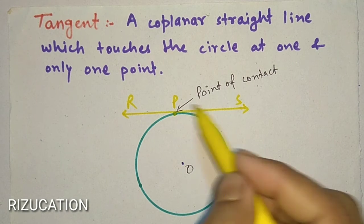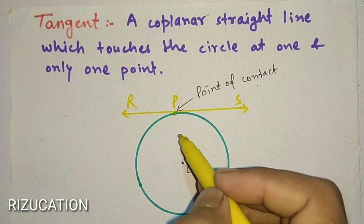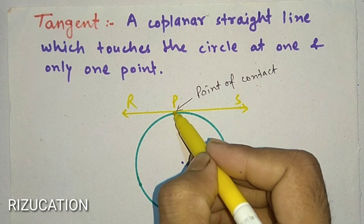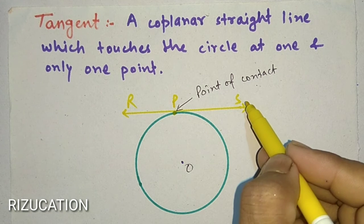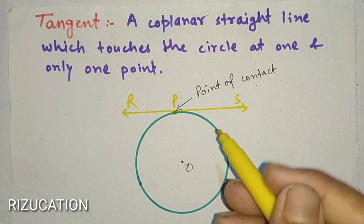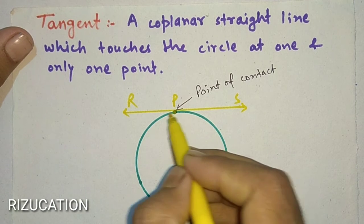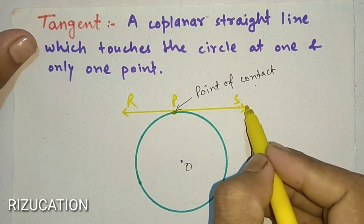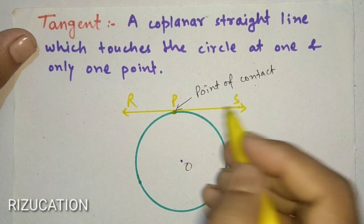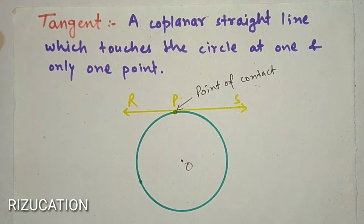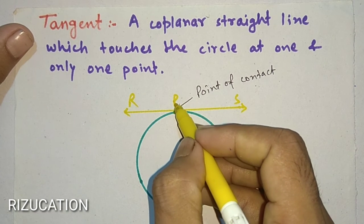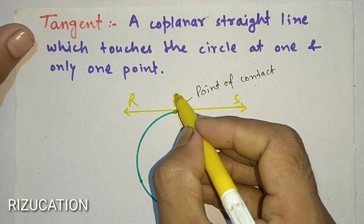So we have a circle having center O and a common point between this line RS and the circle. When we draw a straight line that touches a circle at one point, this point is, suppose it's P.